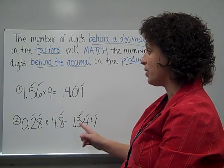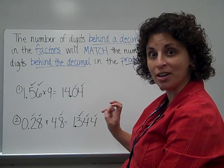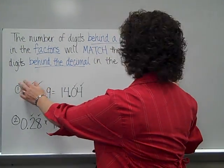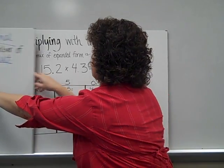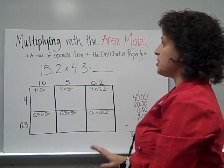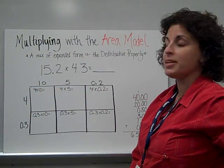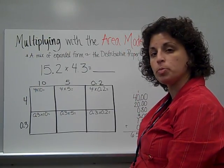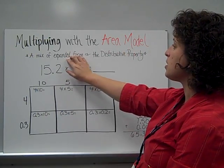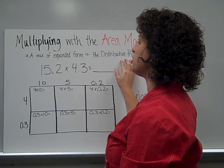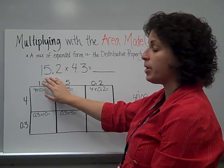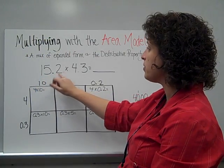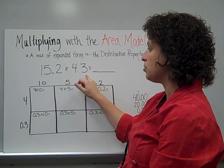Now, we need this trick to help us on our next model. This time, we're going to multiply decimals with an area model. We've used an area model before when we've multiplied by whole numbers — it's a mix of expanded form and the distributive property. My numbers being multiplied together, the factors, are fifteen and two-tenths times four and three-tenths.